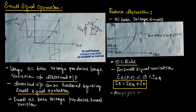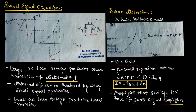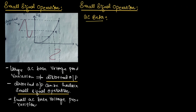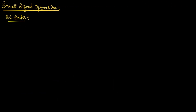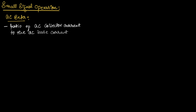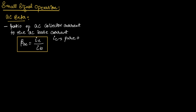If the signal satisfies this condition, we call the signal a small signal. Amplifiers that satisfy the 10% rule are known as small signal amplifiers. Now let us understand AC beta. Similar to DC beta, the AC beta is the ratio of AC collector current to AC base current. We can write beta_AC equals small IC divided by small IB, where small IC is the pure AC collector current and small IB is the pure AC base current.